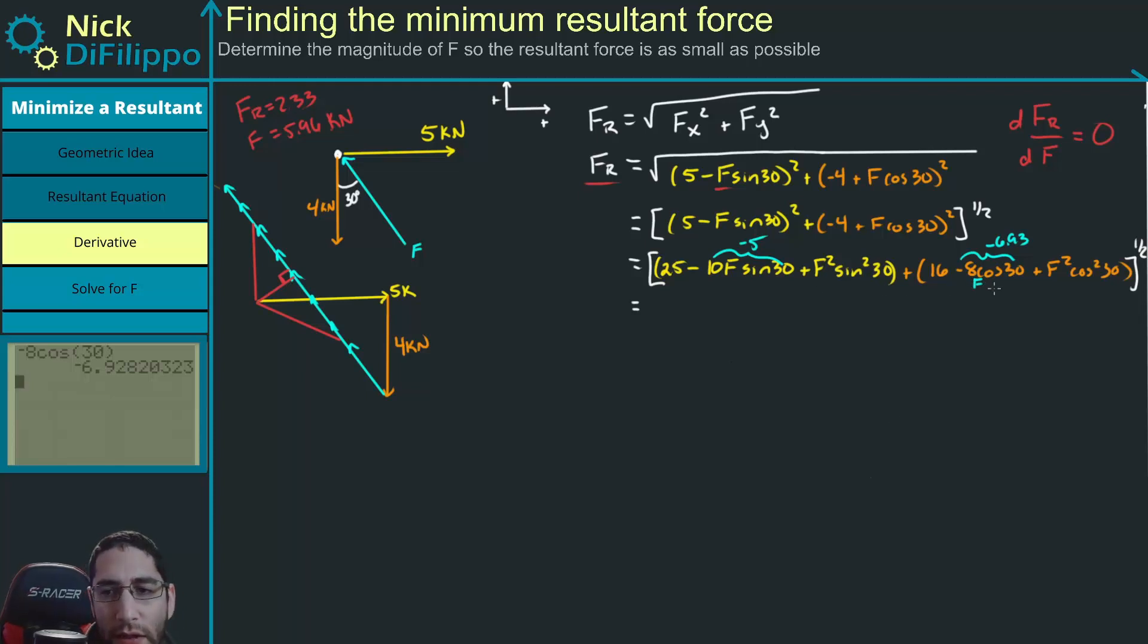I lost that. So if I combine like terms, what do I get? I get this is 41. So if I combine those terms, it's going to be minus 11.93F.